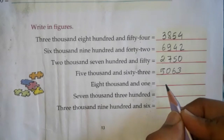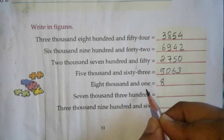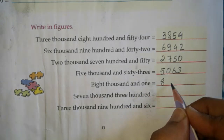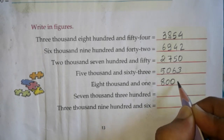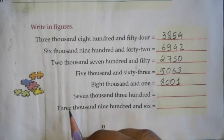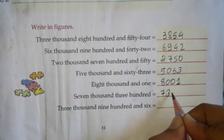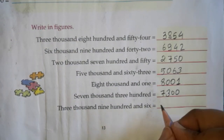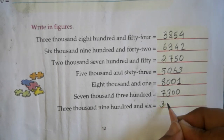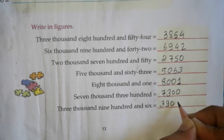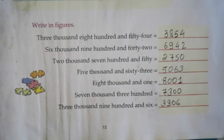Next is eight thousand and sixty-one. 8 is on the thousands place, which is the fourth place. No number is on the hundreds place and no number is on the tens place, so we write zero on both places, and one. Next is seven thousand and three hundred. Then three thousand nine hundred and six — 3 is on the thousands place, the fourth place, nine hundred and six. No number is given on the tens place, so we write zero there.